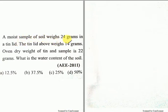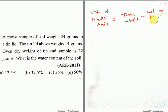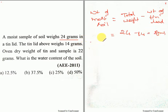The moist sample of soil weighs 24 grams in a tin lid. The tin lid alone weighs 14 grams. The oven dry weight of the tin and the sample is 22 grams. What is the water content of the soil? First, the weight of moist soil equals total weight minus weight of tin lid, which is 24 minus 14 — that comes to 10 grams.